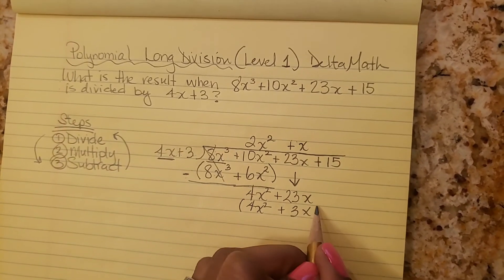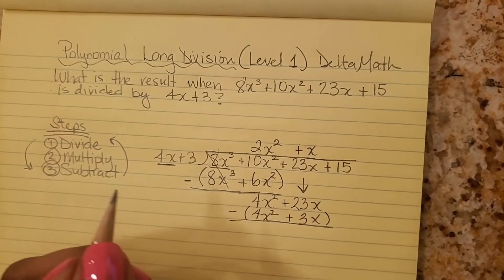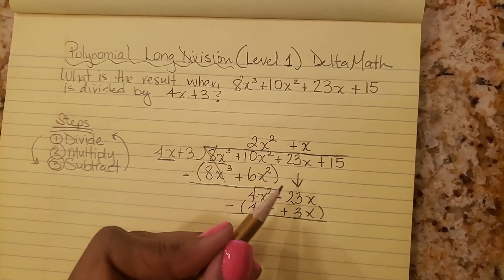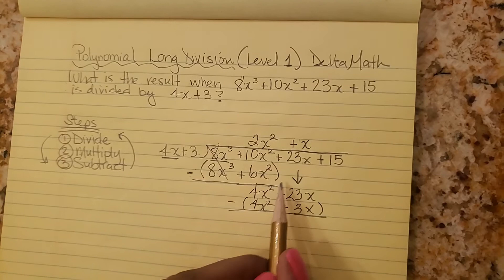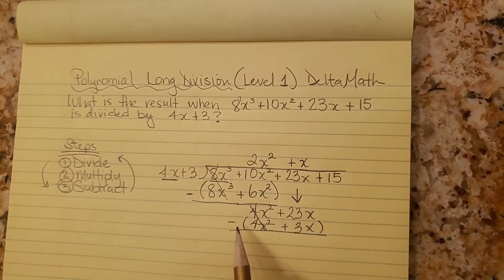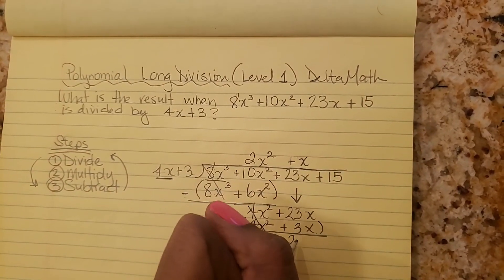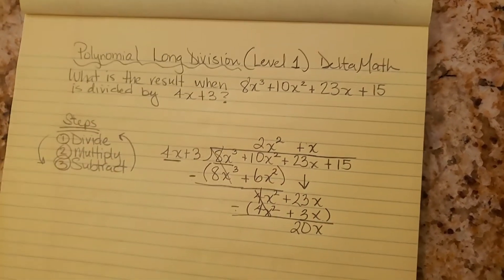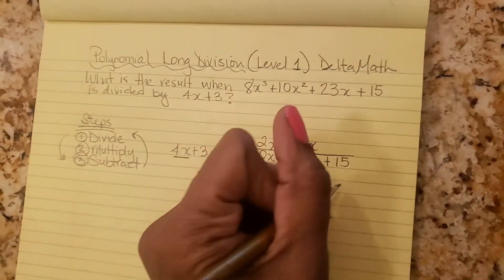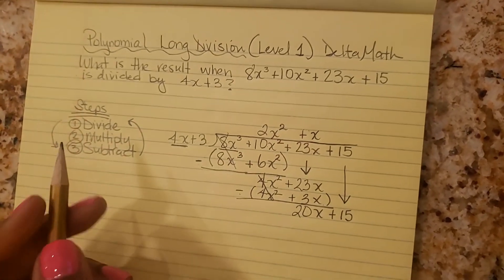Put parentheses. Being neat doesn't hurt. 4x squared minus 4x squared is 0. 23x minus 3x is 20x. Bring down the 15, plus 15.